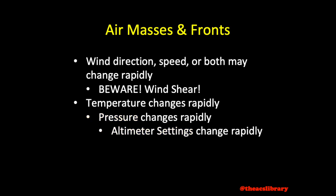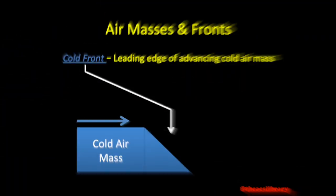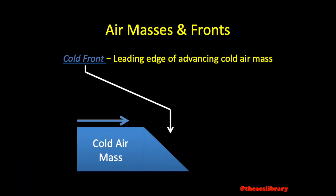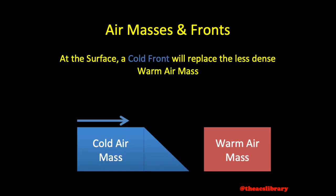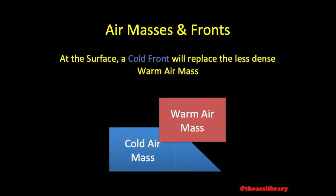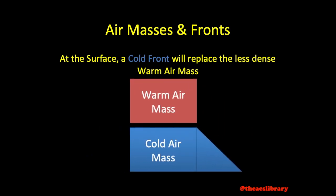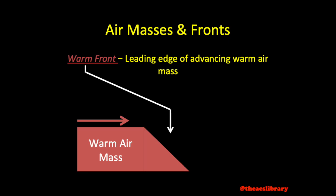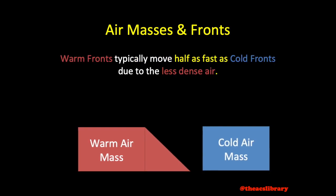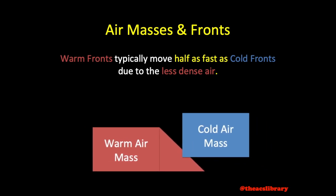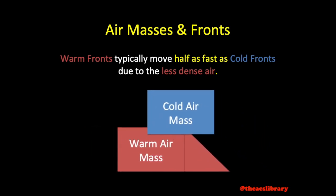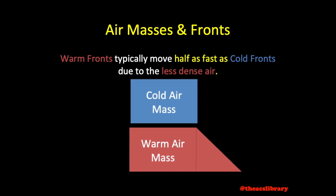A cold front may be defined as the leading edge of an advancing cold air mass. At the surface, if a cold front encounters a warm air mass, the cold front will overtake and replace the warmer, less dense air mass, pushing it upward like in this animation. A warm front is the leading edge of an advancing warm air mass. Because the warm air is slow to overtake and replace the colder, denser air, warm fronts typically move about half as quickly as cold fronts do.